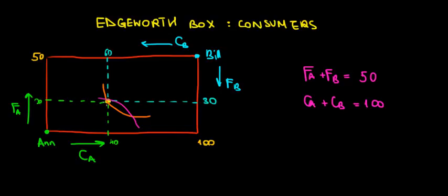Let's stay with our yellow dot from the previous video. We have the indifference curves of N — the orange one is N's indifference curve — whereas the purple is the indifference curve of Bill. From Bill's perspective, it's also a convex shape of the indifference curve.